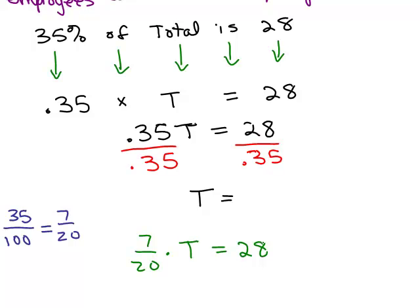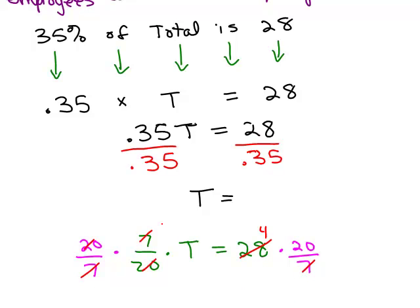Now, this does require that you know how to solve equations with fractions here. And all you need to do is multiply both sides by the reciprocal. So this 7 twentieths, the reciprocal is 20 sevenths. That way, I'll be able to solve for T. So I'm going to multiply both sides by 20 sevenths. And then I'm just going to cancel. 7 goes into 28, 4. Everything cancels over here. So I'm going to get my T is 80.